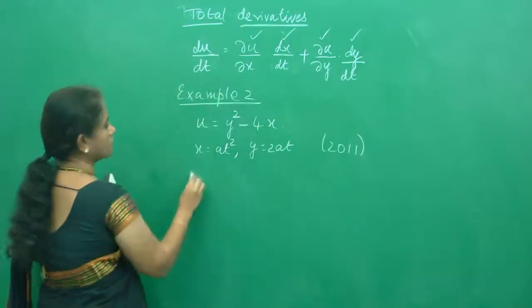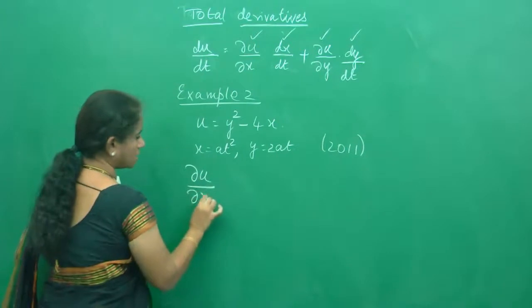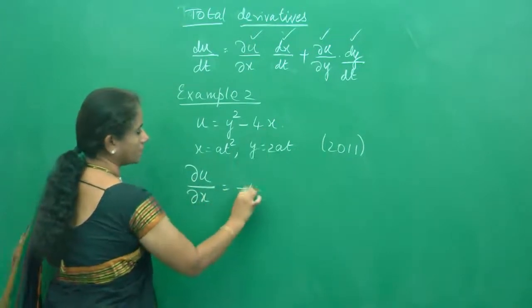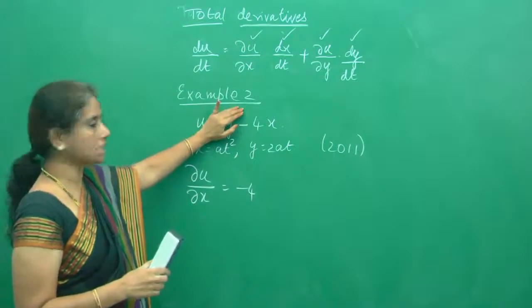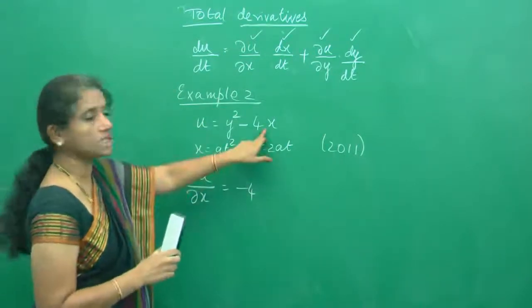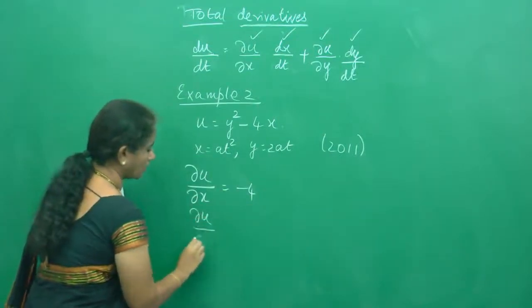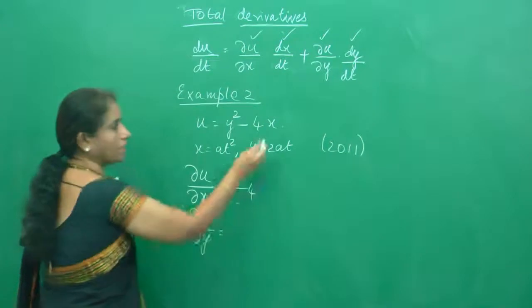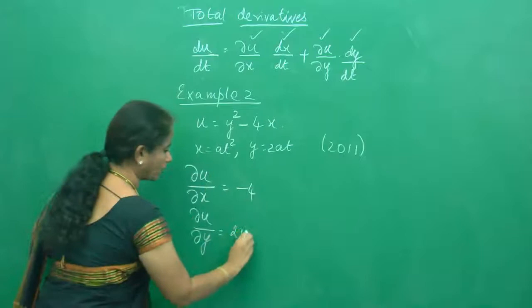So what is first ∂u/∂x? ∂u/∂x is nothing but minus 4. Do you know why? Because y square is a constant and derivative with respect to 4x minus 4x is minus 4. And what is ∂u/∂y? The derivative of y square is 2y.